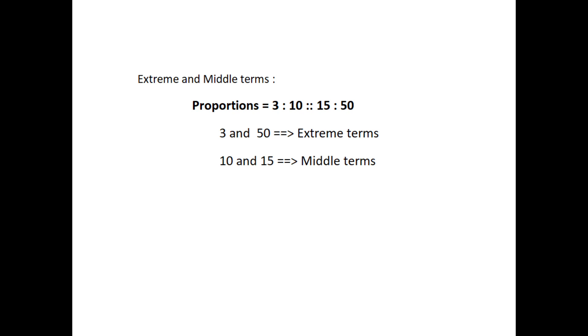Next, extreme and middle terms. If two ratios are not equal, then we can say that they are not in proportions. In a statement of proportions, the four quantities involved when taken in order are known as respective terms. First and fourth terms are known as extreme terms. Second and third terms are known as middle terms.